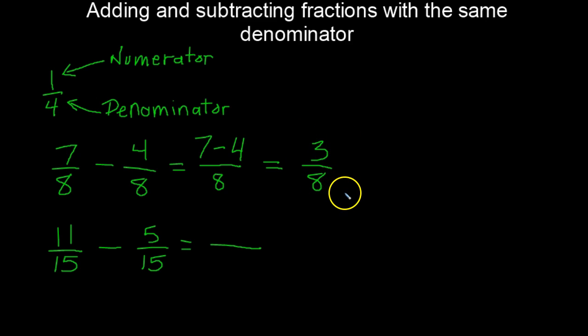Let's look at eleven fifteenths subtract five fifteenths. Again, the denominator is going to be the same, and we're just taking eleven and subtract five, which works out to six fifteenths.